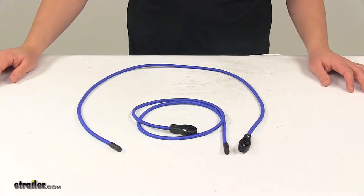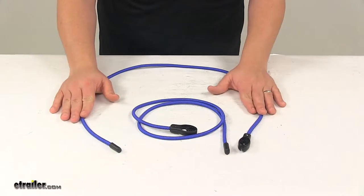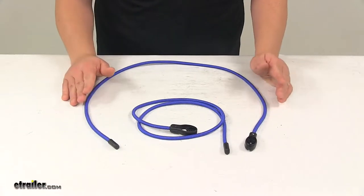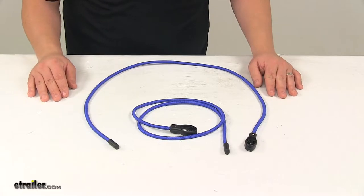Today we're taking a look at the ProGrip stretch locks. These stretch locks let you easily secure multiple items at one time, so they're great for bundling power cords, hoses and pipes.